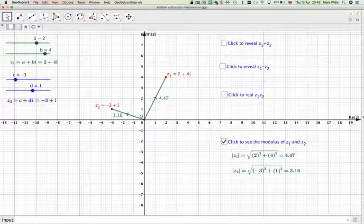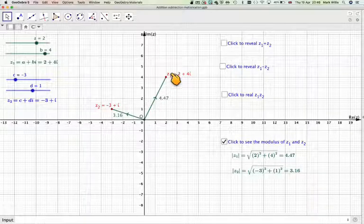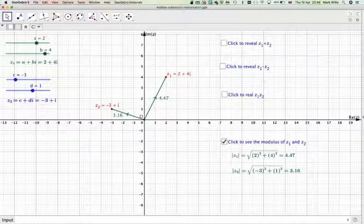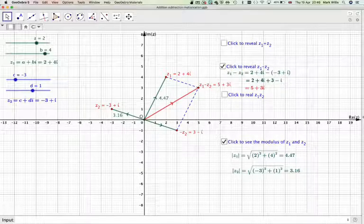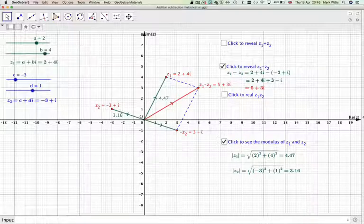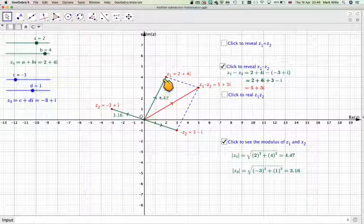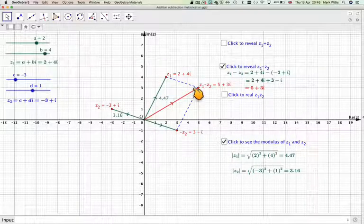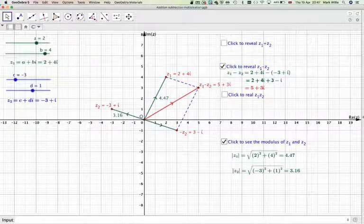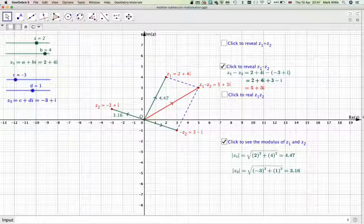Let's have a look now what we mean by Z1 minus Z2. So that's going to be like going Z1 minus Z2 will be going like in the opposite direction to this one here. So we'll get something like this. This is the minus Z2. So it's like going Z1 minus Z2, that's that distance there, that will take me to that point there, which is 5 plus 3i. So that is Z1 minus Z2.